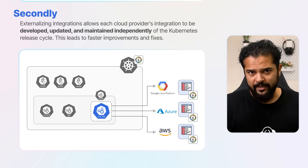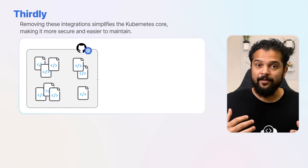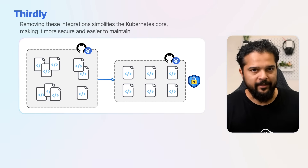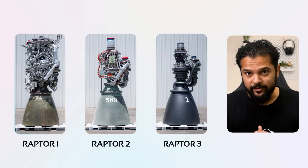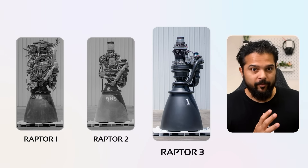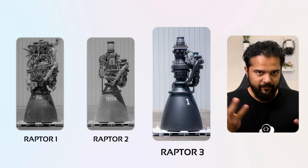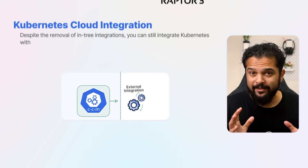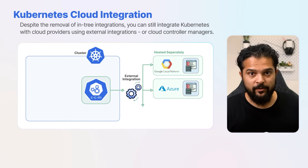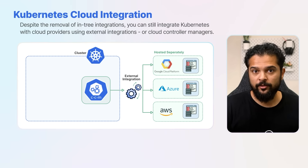This leads to faster improvements and fixes. Finally, removing these integrations simplifies the Kubernetes core, making it more secure and easier to maintain — just like how the SpaceX Raptor engines evolved over time, where a lot of complexities were removed and optimized. Despite the removal of in-tree integrations, you can still integrate Kubernetes with cloud providers using external integrations or cloud controller managers.